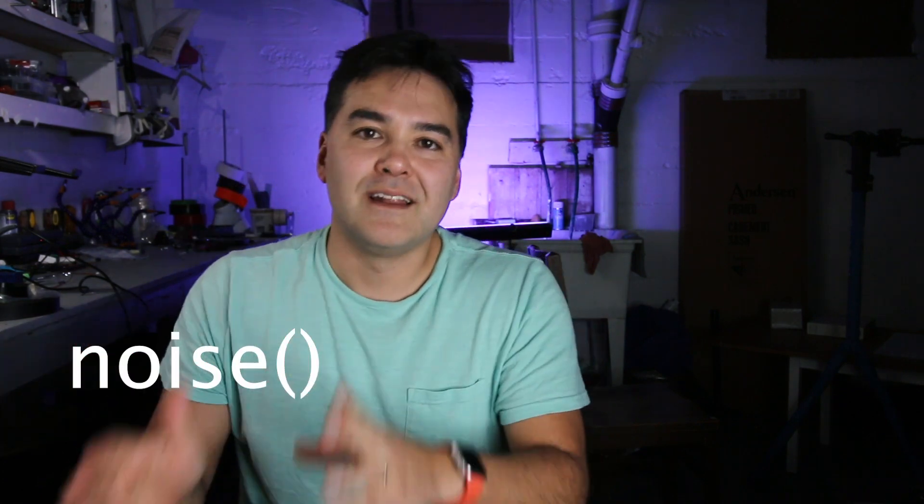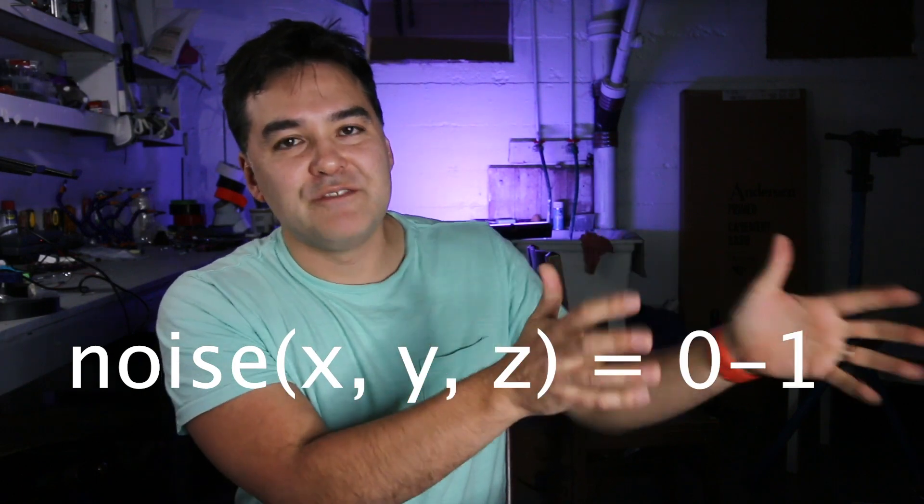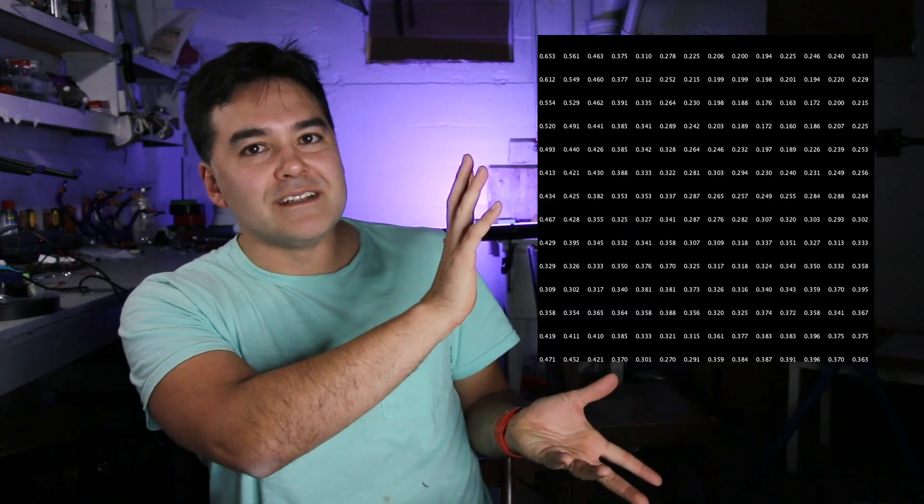So we have the noise function, put in an X coordinate, put in a Y coordinate, put in a Z coordinate, and we get some value from zero to one. As an example, let's put in some numbers here, and we get this. But one number on its own doesn't really do much for us. What we need is a whole grid of numbers. So we have a whole grid of X and Y coordinates that are then determining all these different noise values throughout the grid.